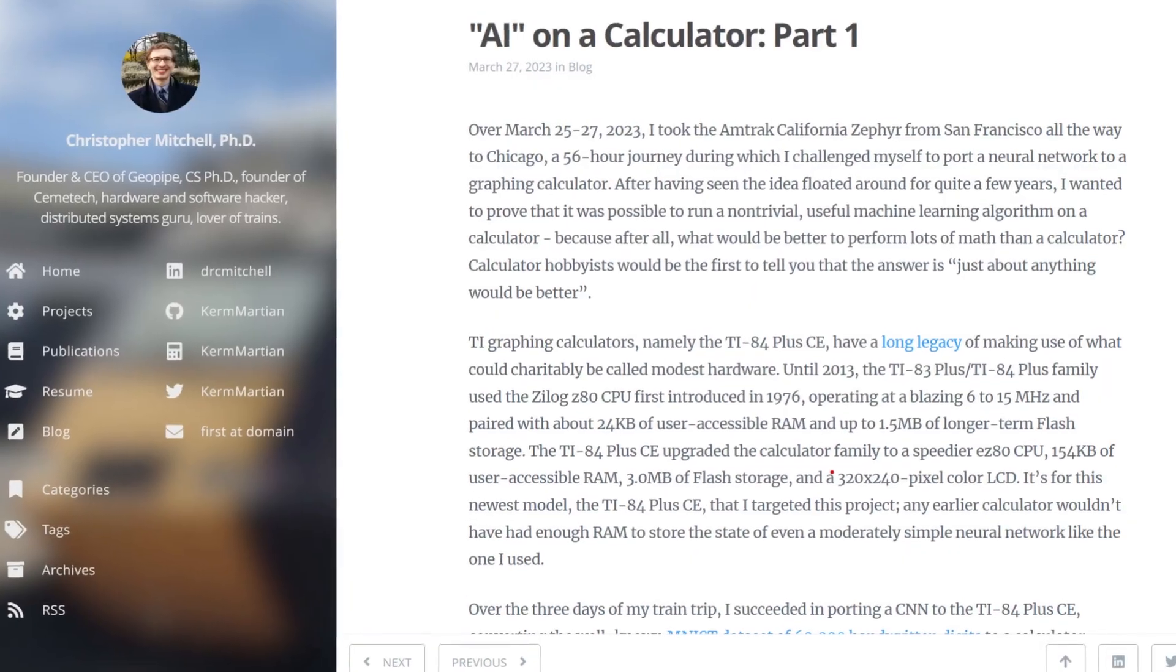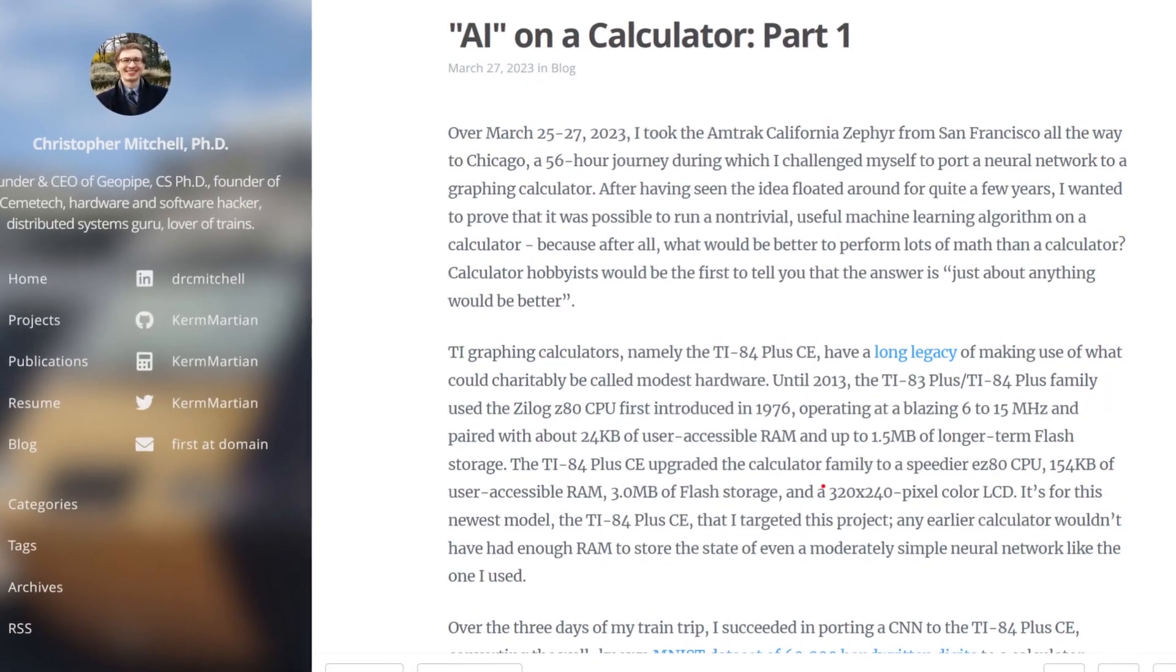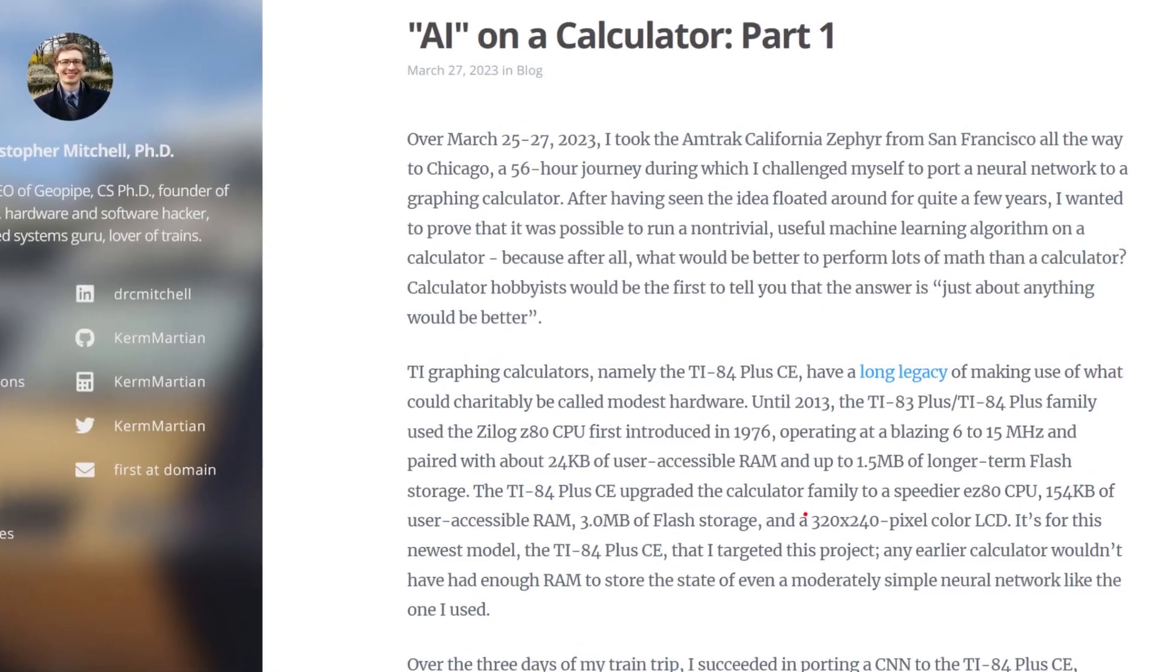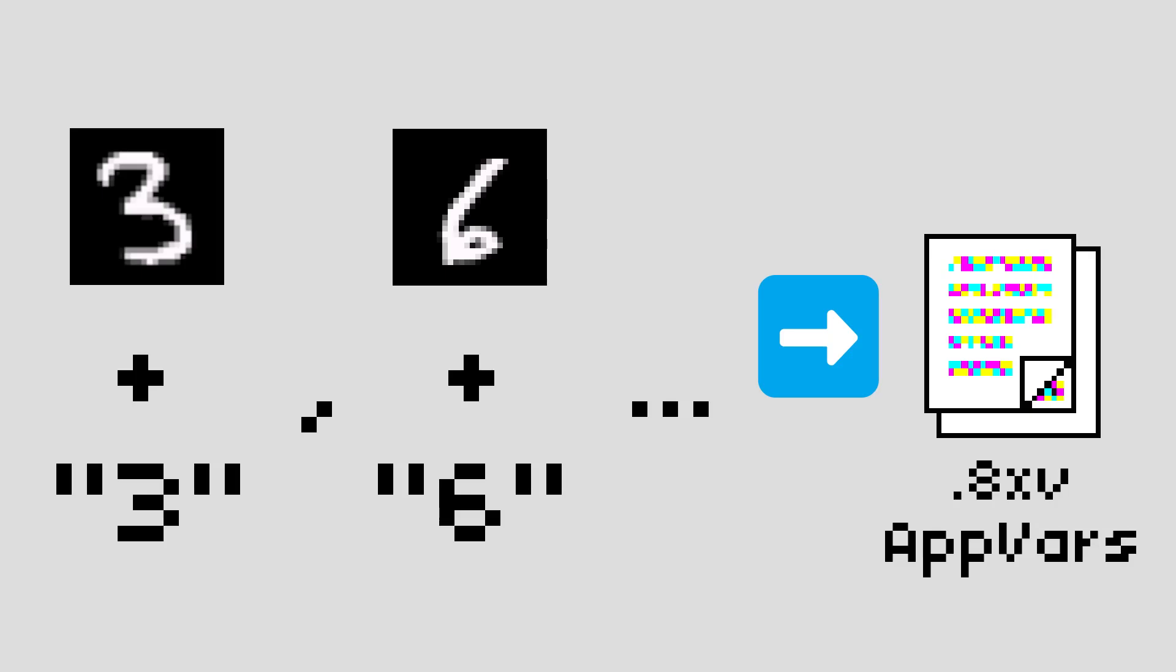I've detailed my full development process in a post on my blog Z80.me, link in the description, but the steps include building a Python program to pack MNIST images with the label of the digit represented into data files called AppVars for the calculator.